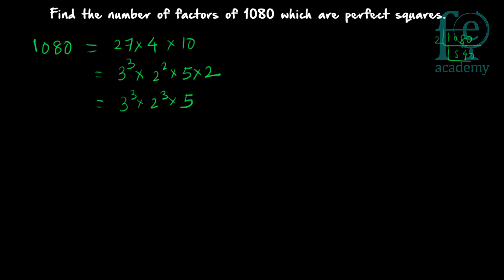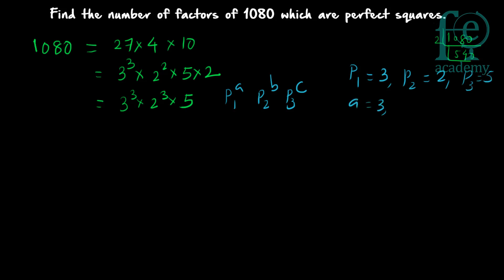Now 1080 is of the form p1 raised to a, p2 raised to b, and p3 raised to c, where p1, p2, p3 are prime numbers. In this case p1 is 3, p2 is 2, p3 is 5, and a is 3, b is 3, and c is 1. So we have expressed the number as a product of powers of prime numbers: 1080 equals 3 cubed into 2 cubed into 5.